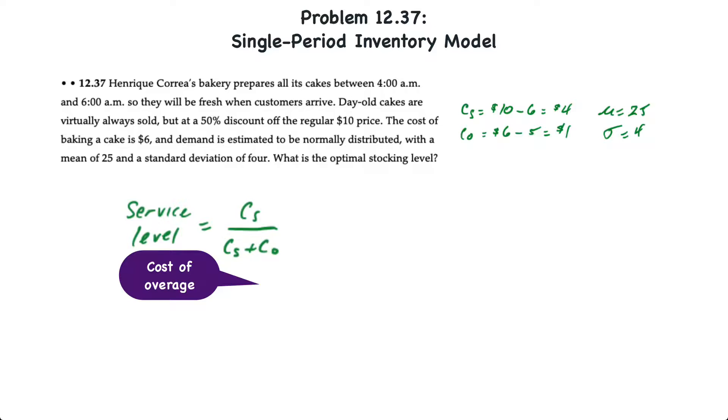The first thing we want to do then is determine an optimal service level based on the formula of the cost of being short divided by the cost of being short plus the cost of being over. The cost of being short is essentially the same as the stockout cost. In our formula, the cost of shortage is $4 and we divide that by the cost of shortage plus the cost of overage, $4 plus $1 or $5. So $4 over $5 works out to 0.80. If we look at our standard normal table and look for 80%, you'll find that that corresponds to a Z value of about 0.84.